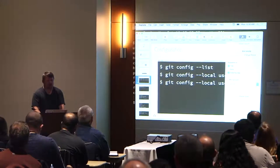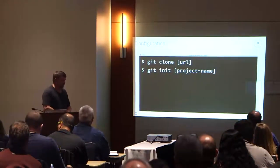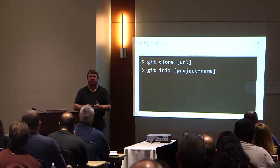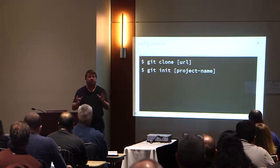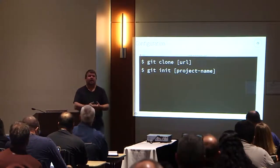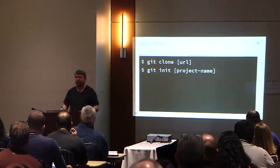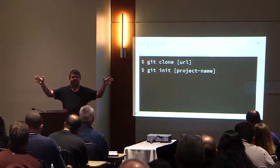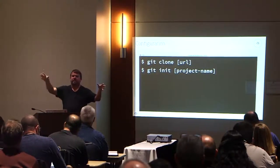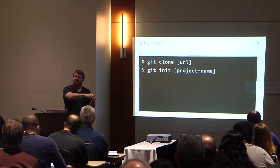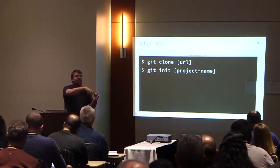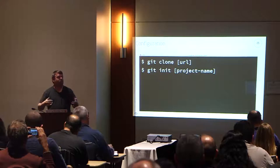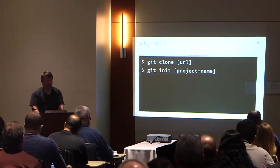When we actually talk about where code lives, we talk about a command called 'git clone'. For those of you who've done CVS and SVN, this is going to be a bit confusing. A clone basically takes everything in a server database, copies it, and puts it into your local database. Once you have that local database, you can make small incremental changes and then push them back up. That's the root of how people work with GitHub.